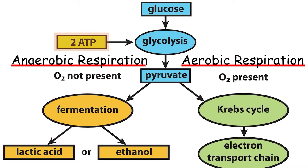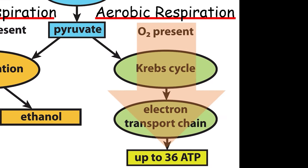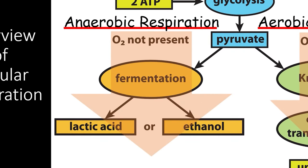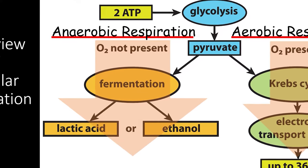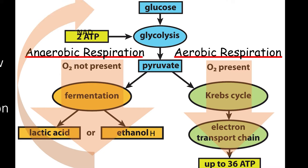Glycolysis itself releases a small amount of ATP. Then the process of cellular respiration continues on one of two paths. If there is oxygen present, cells will carry out aerobic respiration, sending pyruvate through the Krebs cycle, which powers the electron transport chain to produce lots and lots of ATP. If there is no oxygen, cells carry out anaerobic respiration through the process of fermentation. Fermentation does not produce any ATP itself, though it does recycle some of the electron carrier molecules used in glycolysis, allowing the cell to still produce a small amount of ATP.